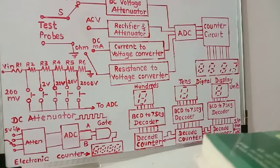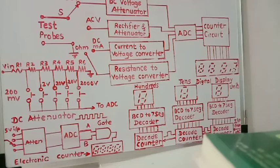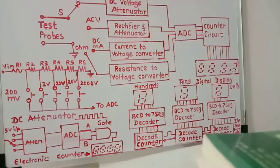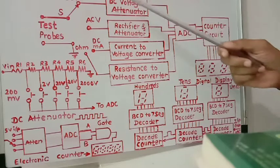Hello students, today we will study about the digital multimeter. We always use a digital multimeter for measurement of different electrical quantities such as resistance measurement, DC voltage measurement, DC current measurement, AC voltage, AC current, or testing of different electronic components. We use these portable digital multimeters which are available in our electronics laboratory. So we have to study about this digital multimeter.